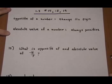1.3 numbers 15, 18, and 19. These numbers all have something to do with opposite and absolute value of a number.